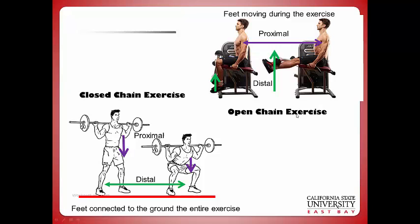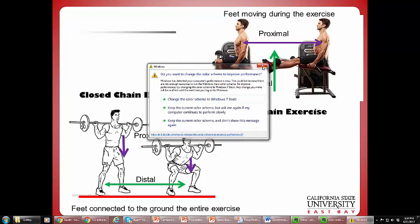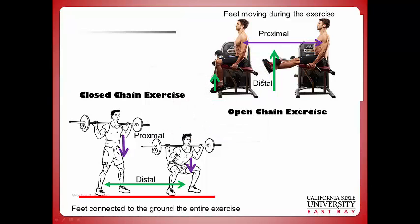In the open chain, the distal part of the body — the feet, the legs, the tibia — are moving throughout a range of motion. The distal segment is constantly moving, and the proximal part of the body is basically stationary.